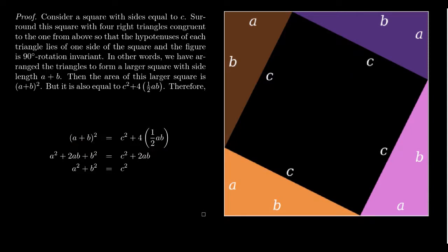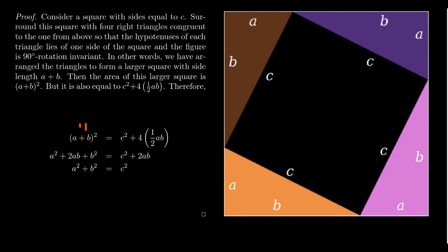Let's simplify this algebraically. If you FOIL (A + B)², that is (A + B)(A + B), you get A² + AB + AB + B². On the right-hand side, 4 times one-half gives 2, so we get C² + 2AB. The left-hand side becomes A² + 2AB + B².